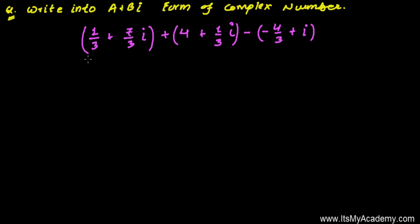We'll write this into a plus bi form of complex numbers. Here we have (1/3 + 7/3i) + (4 + 1/3i) - (4/3 + i). We have three complex numbers here, and we're going to do the algebra of the complex numbers. We're going to add and subtract them and finally give one answer in the format of a plus bi.